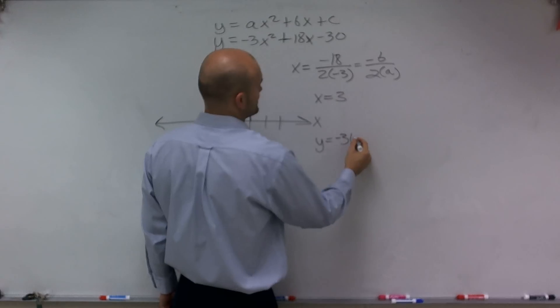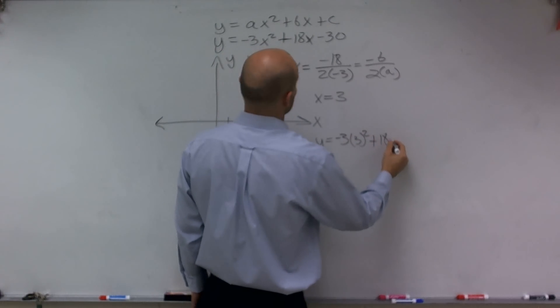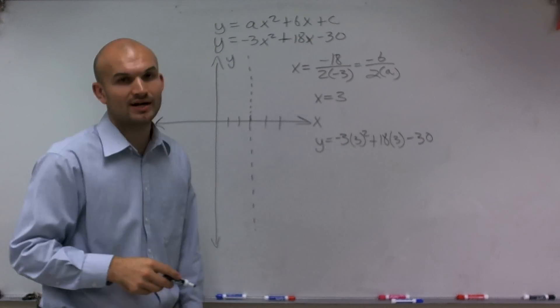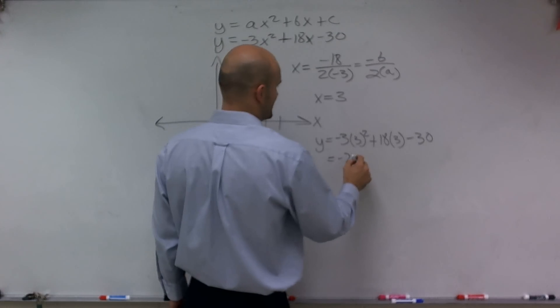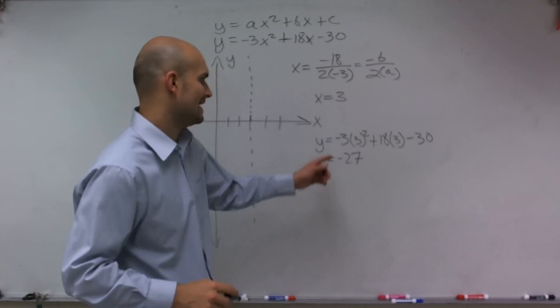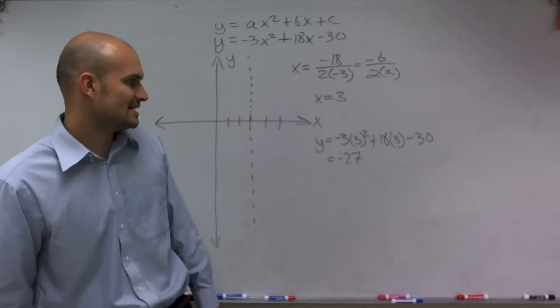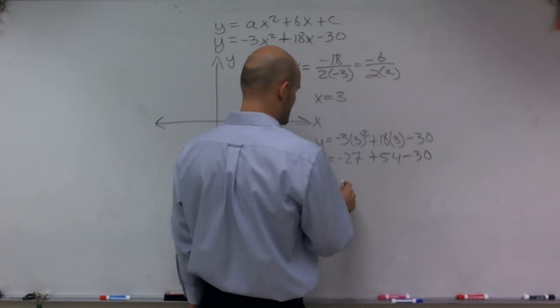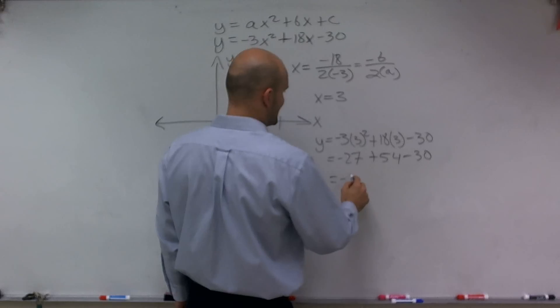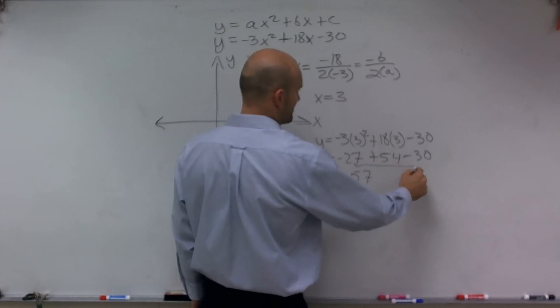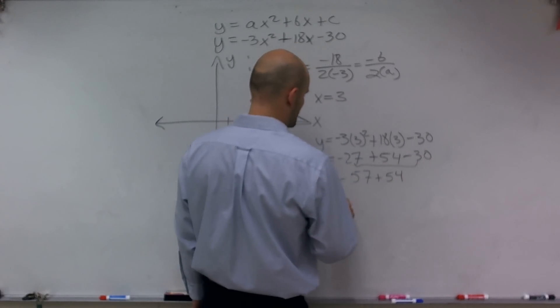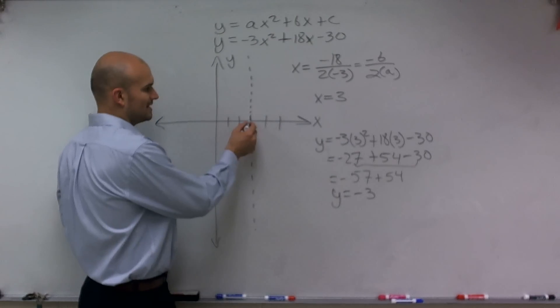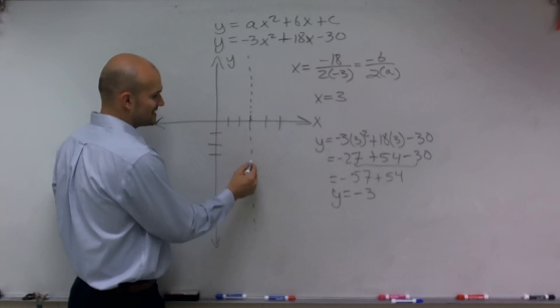So I have negative 3 times 3 squared plus 18 times 3 minus 30. Well, 3 squared is 9. 9 times negative 3 equals negative 27. 18 times 3 is 54, so positive 54 minus 30. Therefore, I have negative 27 minus 30, which is negative 57, plus 54. Therefore, y equals negative 3. So I go over 3 and then down 3, and that's my vertex.